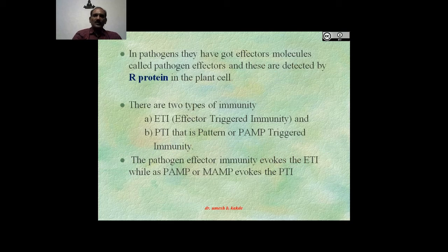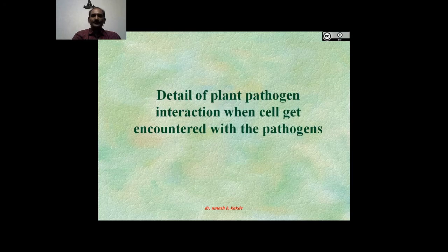In pathogens, there are effector molecules called pathogen-effectors, and these are detected by R proteins in the plant cell. There are two types of immunities: ETI, that is effector-triggered immunity, and PTI, that is pattern-triggered immunity. Now we will see the details of plant-pathogen interaction when a cell gets encountered with the pathogens.